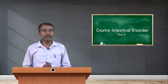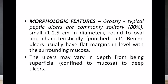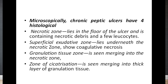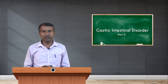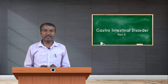When we look at the morphological features grossly, typical peptic ulcers are commonly solitary — nearly 80 percent — very small, 1 to 2.5 centimeters in diameter, round to oval in shape, and characteristically punched out. Benign ulcers usually have flat margins level with the surrounding mucosa. The ulcers may vary in depth from being superficial and confined to the mucosa to being deep ulcers.